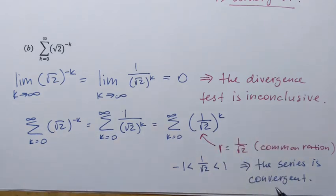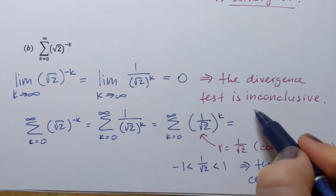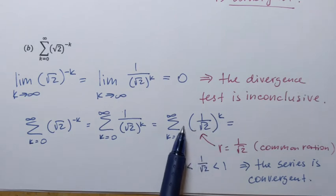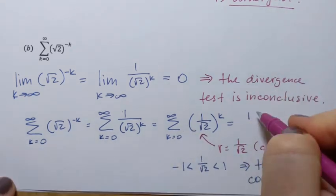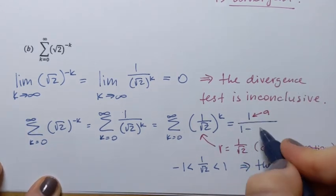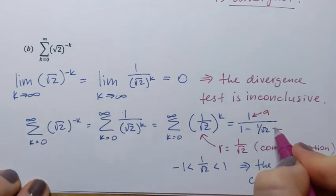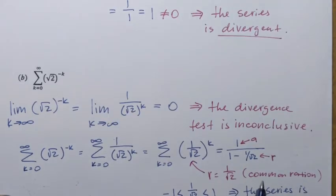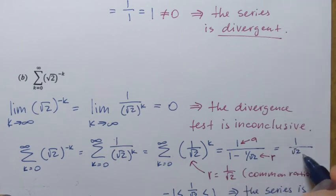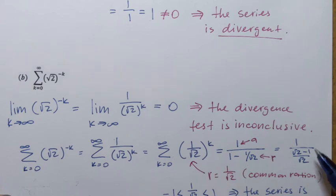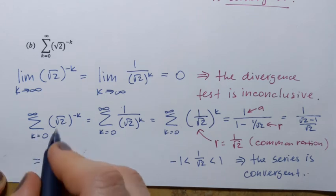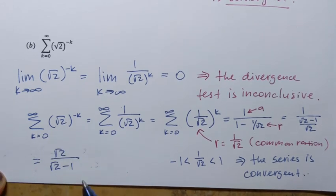Since the series is convergent, we need to find its sum using the geometric series formula a over 1 minus r. There is no visible constant, so a equals 1. In the denominator it's 1 minus 1 over square root of 2. Combining terms using LCD of square root of 2 gives us square root of 2 minus 1 over square root of 2. Dividing means multiplying by the reciprocal, giving 1 times square root of 2 over square root of 2 minus 1. To avoid a radical in the denominator, we rationalize by multiplying by the conjugate square root of 2 plus 1.